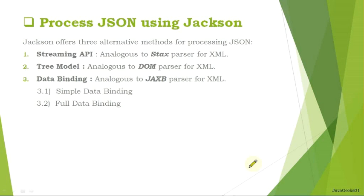Now we are going to see what alternative ways or methods Jackson provides to process JSON. These are: Streaming API, which is quite similar to SAX parser for XML; Tree Model, which is quite similar to DOM parser for XML; and Data Binding, which is quite similar to JAXB. We will talk about all three of these methods in the next slides.